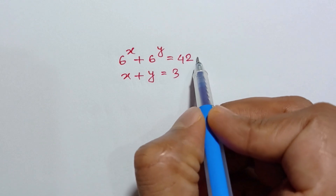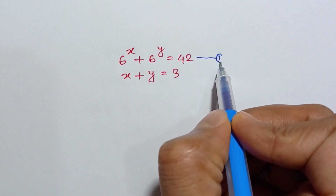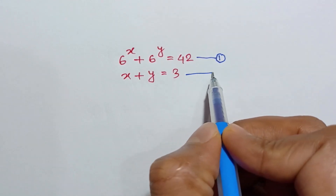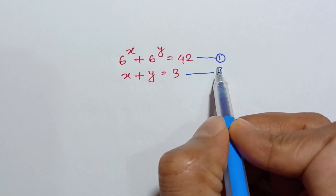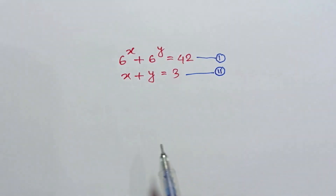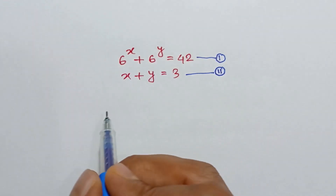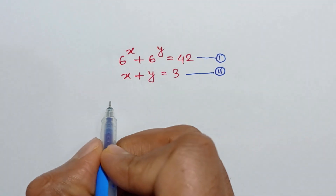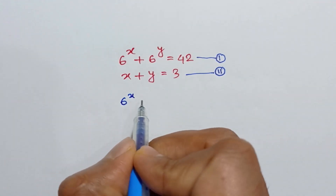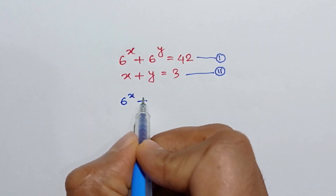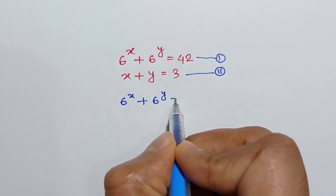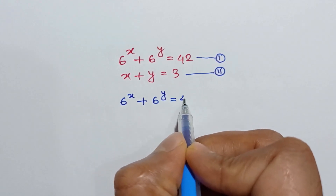Let's call this equation number 1 and equation number 2. From equation number 1, we get 6 to the power x plus 6 to the power y is equal to 42.